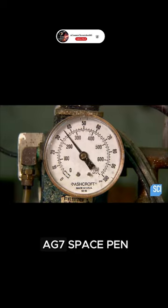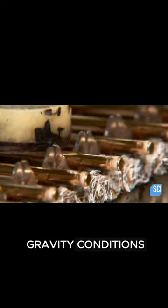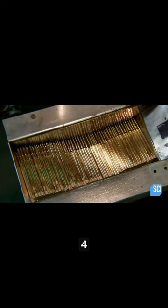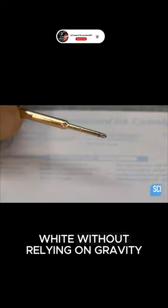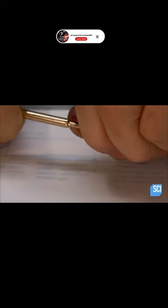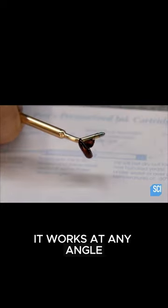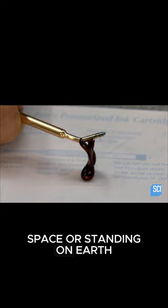The result was the AG-7 space pen, designed specifically for anti-gravity conditions. 4. Versatility. The space pen can write without relying on gravity. It works at any angle, whether you're floating in space or standing on Earth.